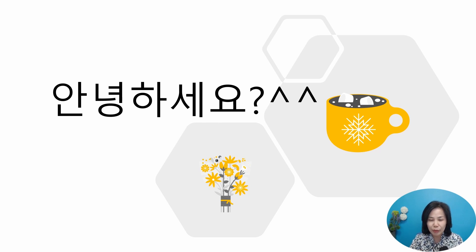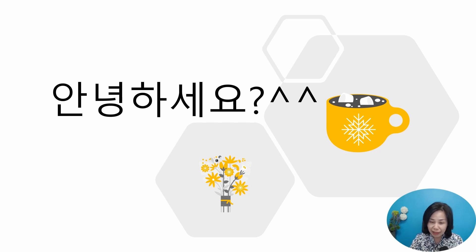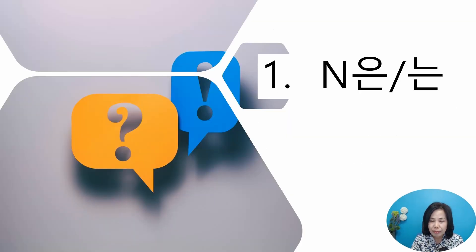I have a quick question — which part was particularly confusing and difficult? If you leave a message, I will make a video based on the list. The first topic of this section is the topic particle 은/는. This is the grammar point that people find difficult and confusing.